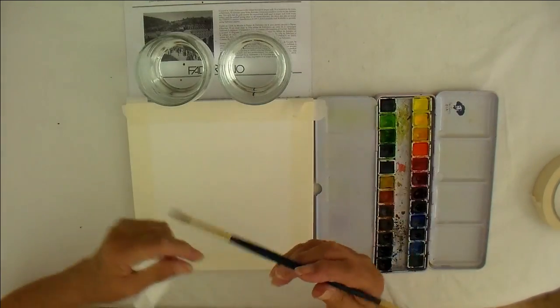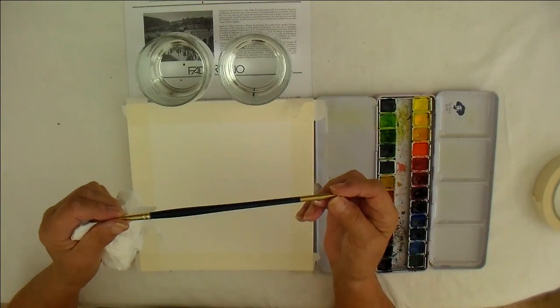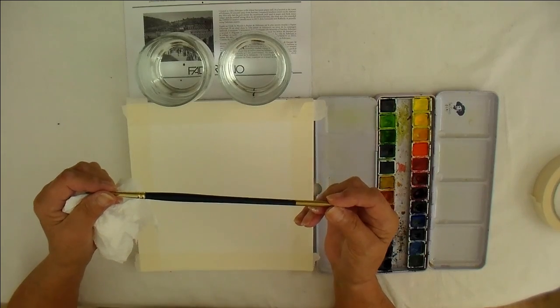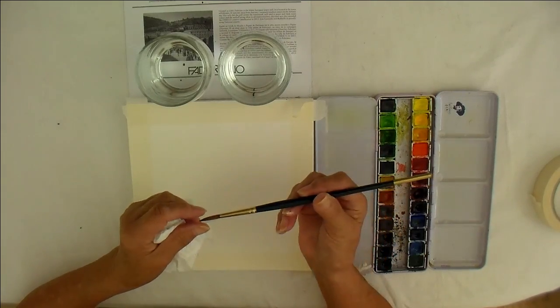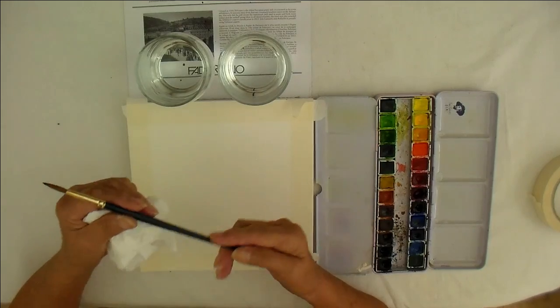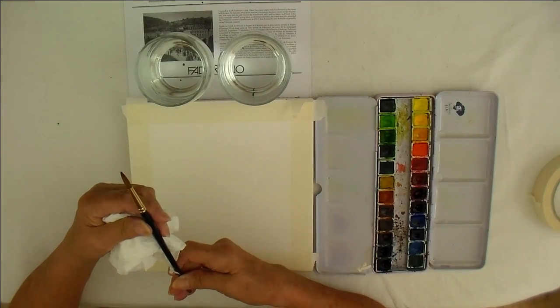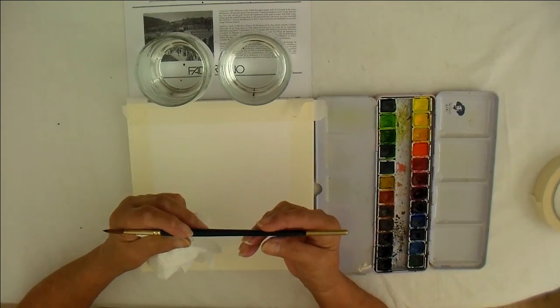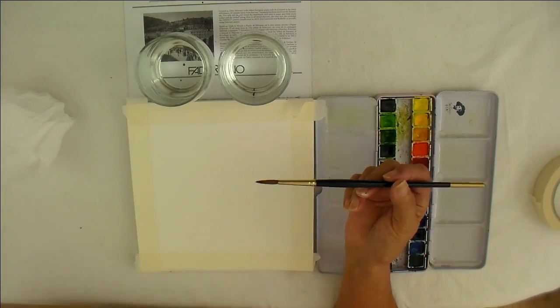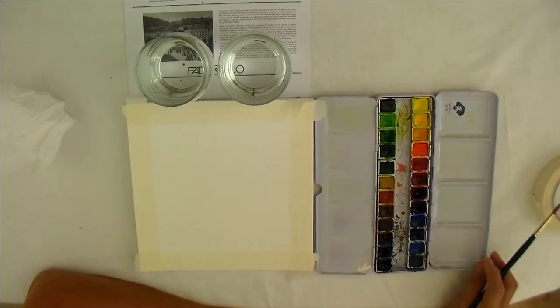So, what am I going to use? I've got here a ProArt Renaissance Sable. It's got a nice point. A number six, I think that is. It's a bit worn. So, we'll see how we get on with this. So, one brush and a limited palette.